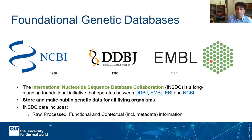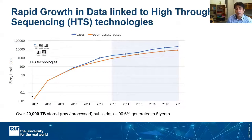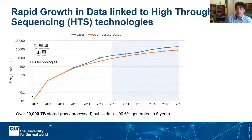These three databases formed a coalition that stands until today. Their mission is to store and share all public genetic information for all living organisms. They are synchronized except for the last 24 hours, which it takes them to capture and share the latest submissions. With the innovation of new technologies, the rate of data accumulation has certainly accelerated. In a period of just five years, we generated more than 90% of the information that currently our public databases store.